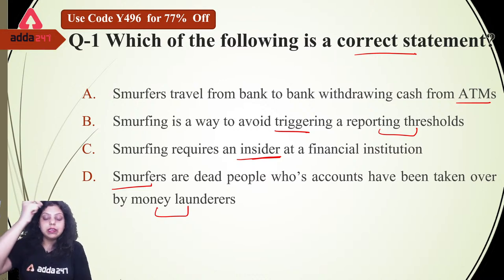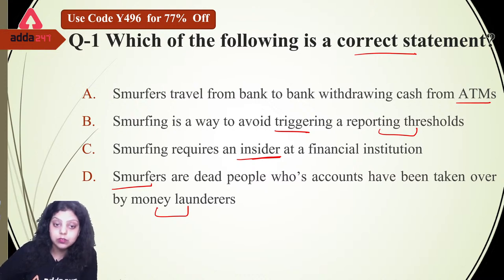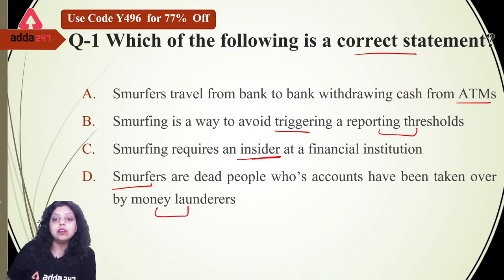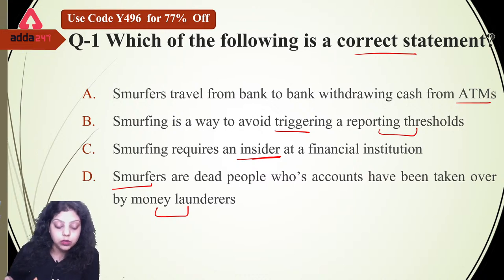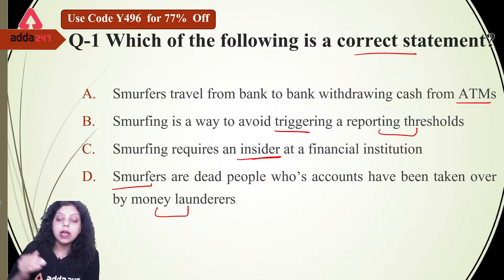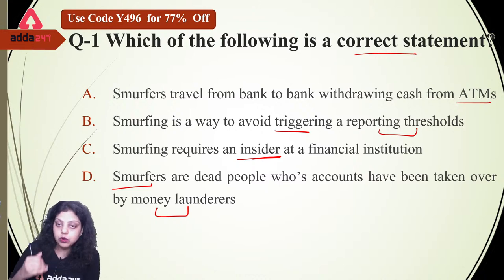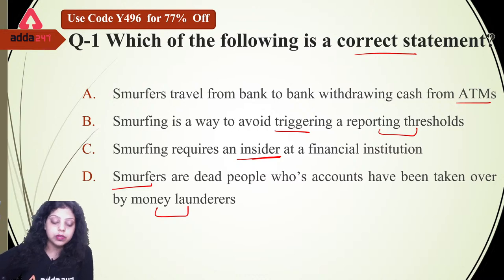The first statement says when smurfers travel from one bank to another and withdraw cash from ATMs, that person is known as a smurfer. The second says smurfing is a way to avoid the triggering or reporting threshold — for example, if I am earning a certain amount of money and I am eligible for income tax liability, I hide that amount so that I do not have to pay income tax to the government of India.